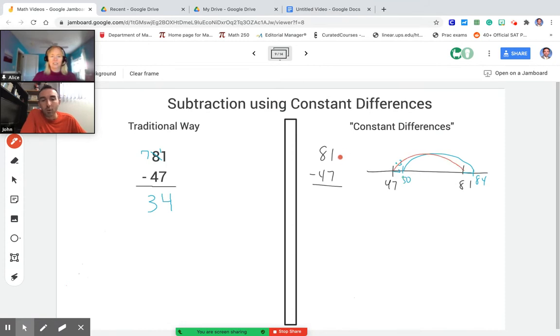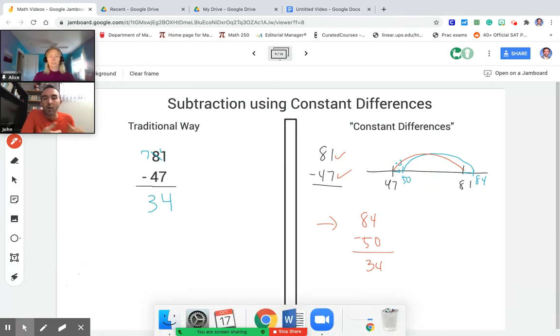So I can essentially turn this problem into 84 minus 50 by just adding 3 to both of these numbers, and when I perform that subtraction that difference is the same as the difference between 81 and 47. And like I mentioned, students find it a little bit easier to subtract multiples of 10. So that's the advantage here that subtraction using constant differences offers.